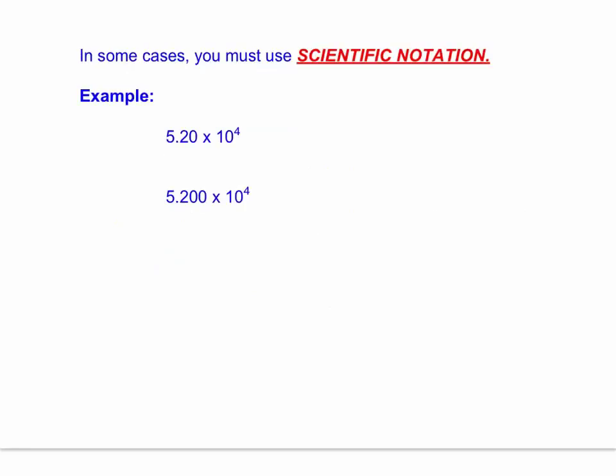Now, there are some cases where simply tacking on a decimal point at the end of a number will not give you the correct number of significant figures. Let's go back to our original example of fifty-two thousand. Fifty-two thousand as written has two significant figures. Fifty-two thousand written this way has five significant figures.